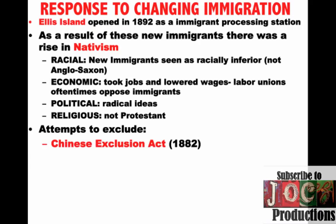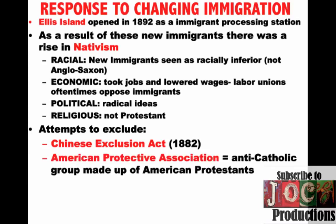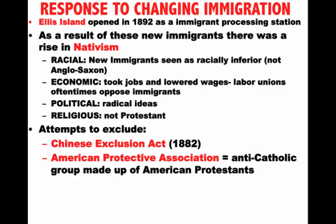We've already seen this with the Chinese Exclusion Act — Chinese immigrants were not under the category of new immigrants, that is Southern and Eastern European immigrants. But you're going to see groups like the American Protective Association, an anti-Catholic group made up of American Protestants, wanting to keep Catholic immigrants from Southern and Eastern Europe out of America. Throughout the decades, literacy tests were proposed, vetoed by various presidents, but in 1917 they were passed — intended to keep the uneducated immigrants, largely from Southern and Eastern Europe, out of America.